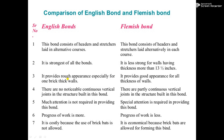The external face in the English bond looks rough in appearance. But in the Flemish bond, we have a proper, good appearance for the face and back of the wall. There are no noticeable continuous vertical joints in the structure built in English bond. In the Flemish bond, there are partly continuous vertical joints into the structure built in this bond.